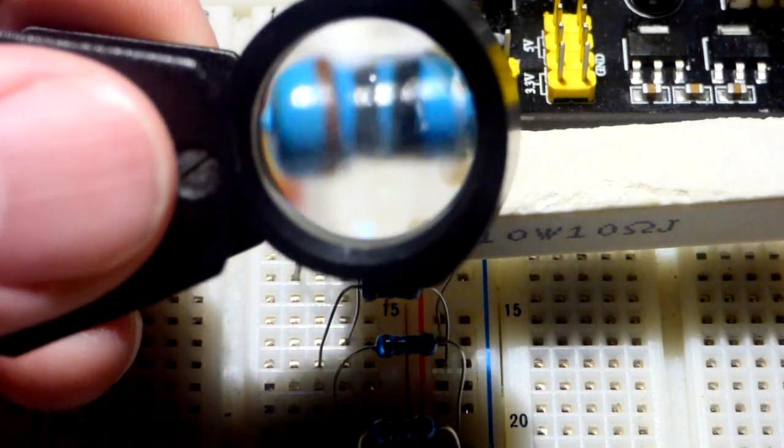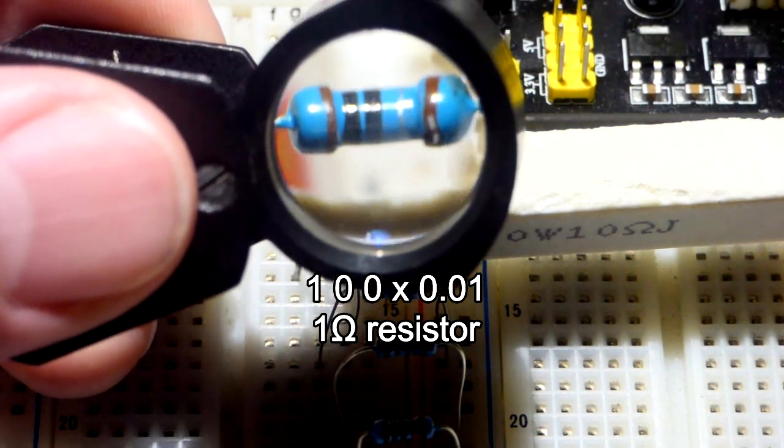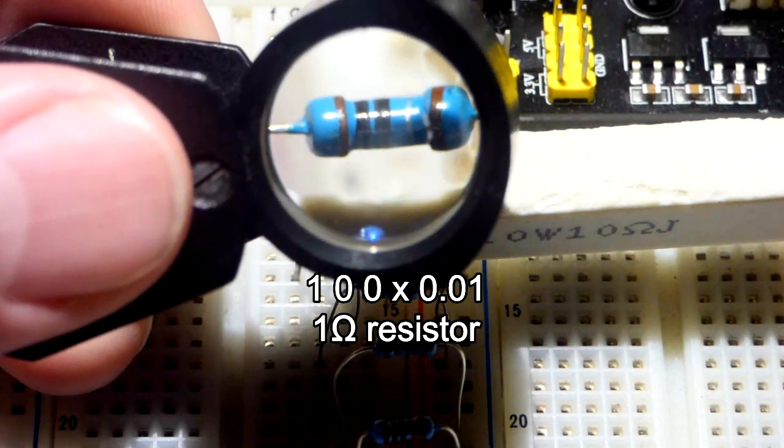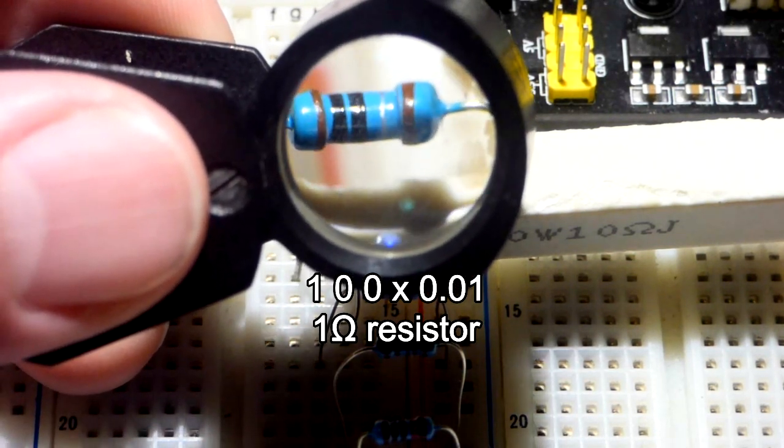So first, let's start with a resistor you probably would not use very often, and that is a 1 ohm resistor right there. So we got brown for 1, black for 0, and then black for 0, and then we have a silver stripe there.